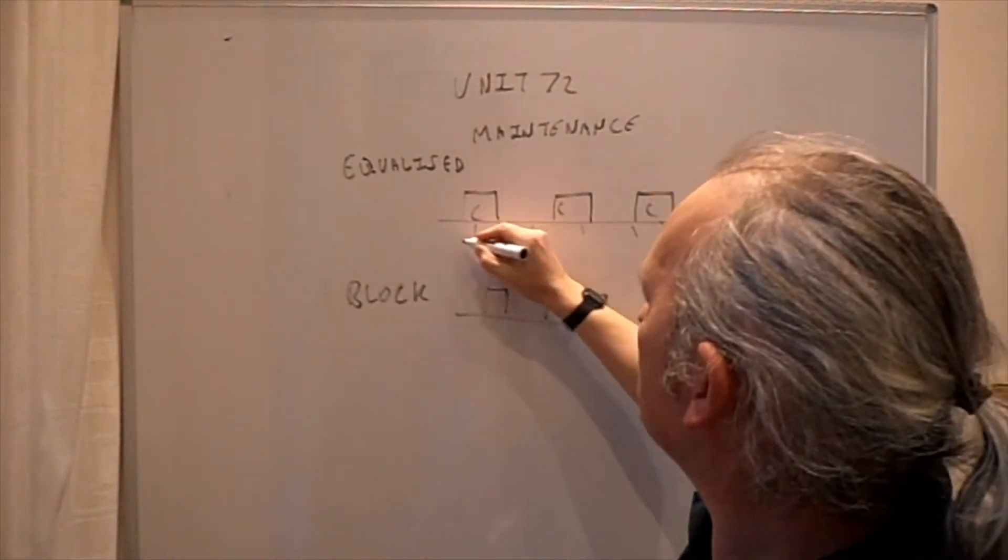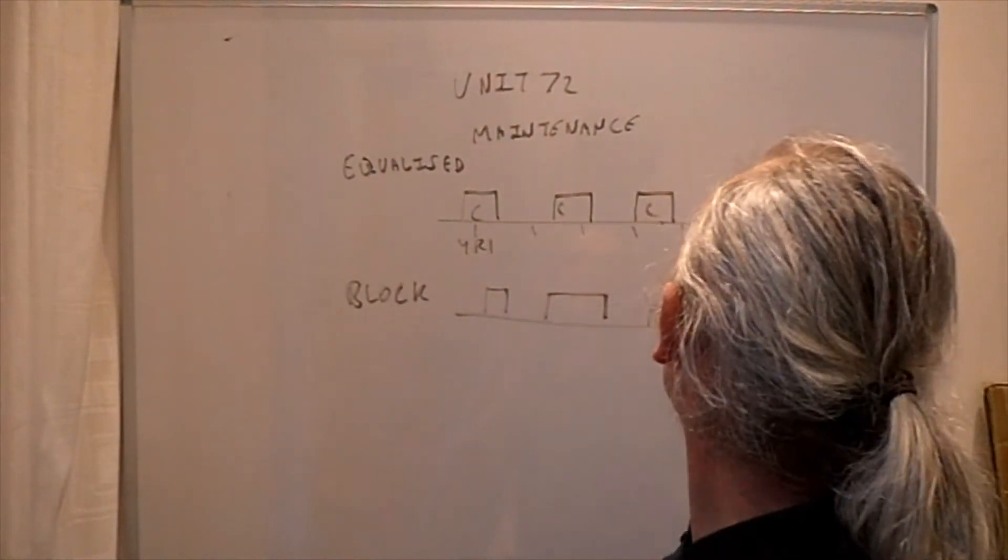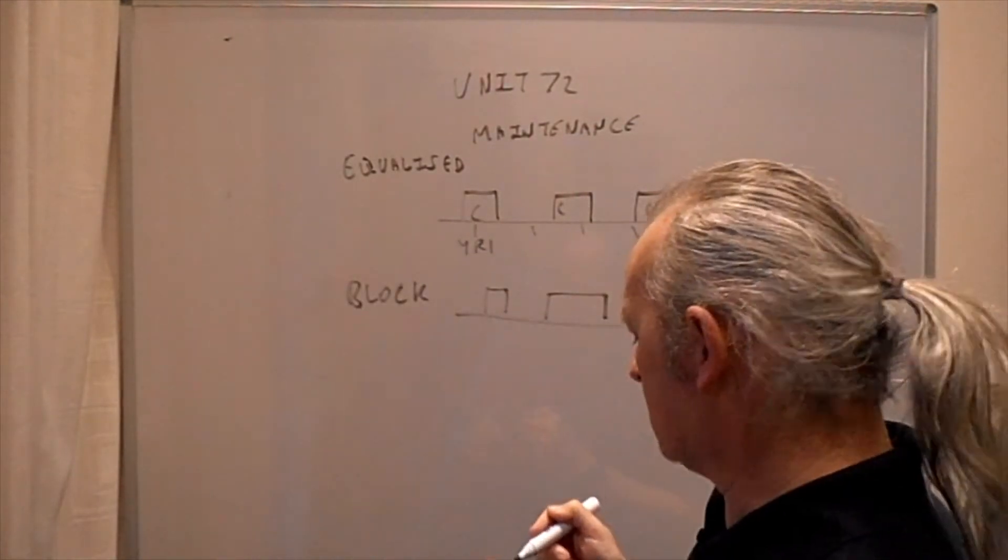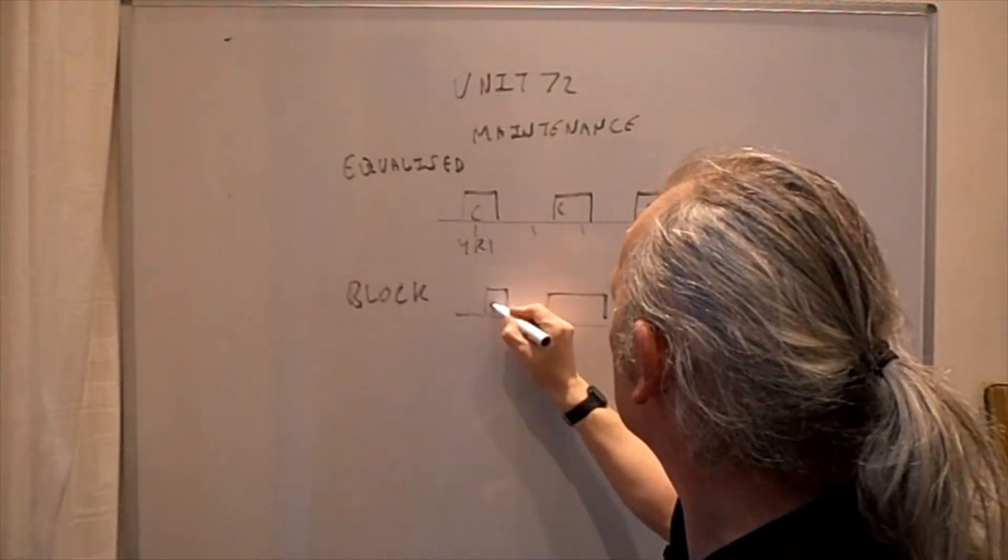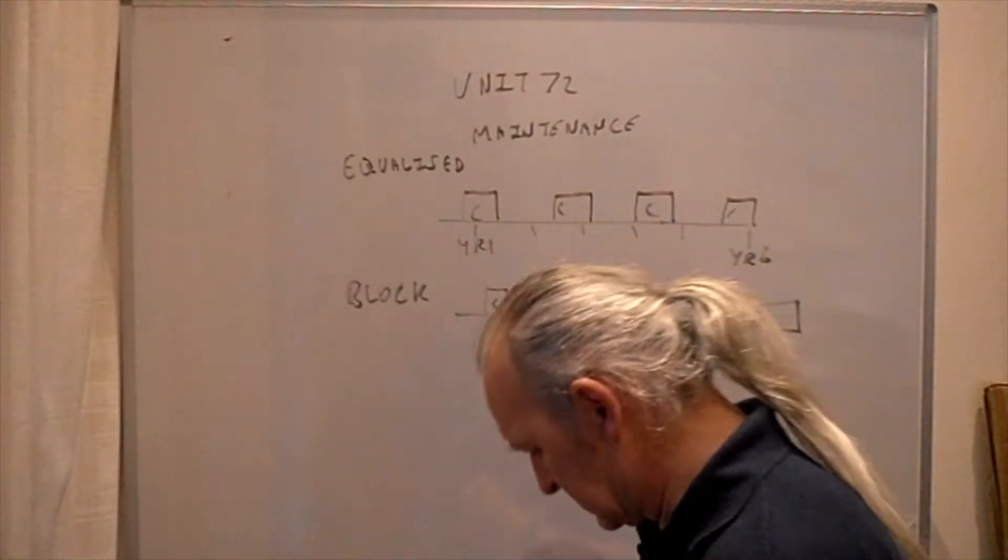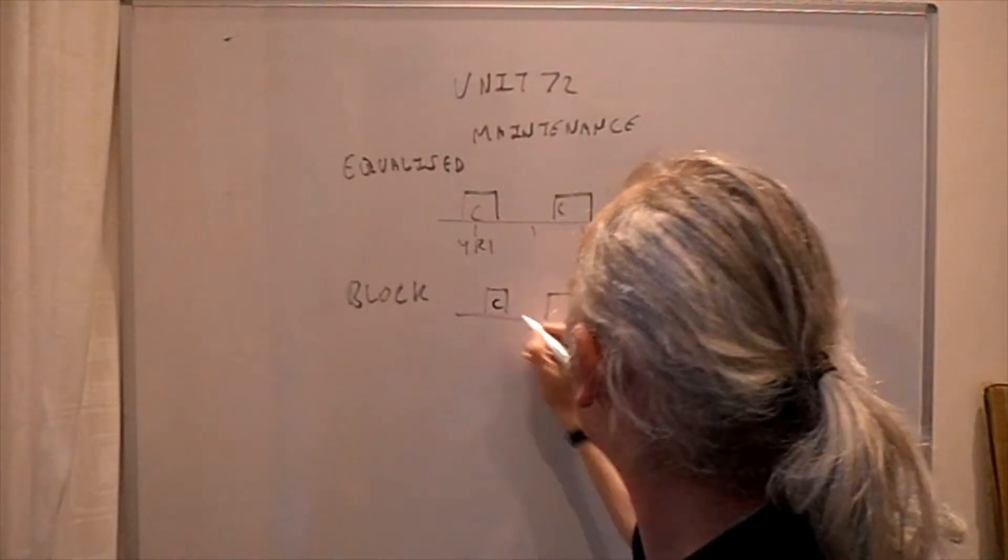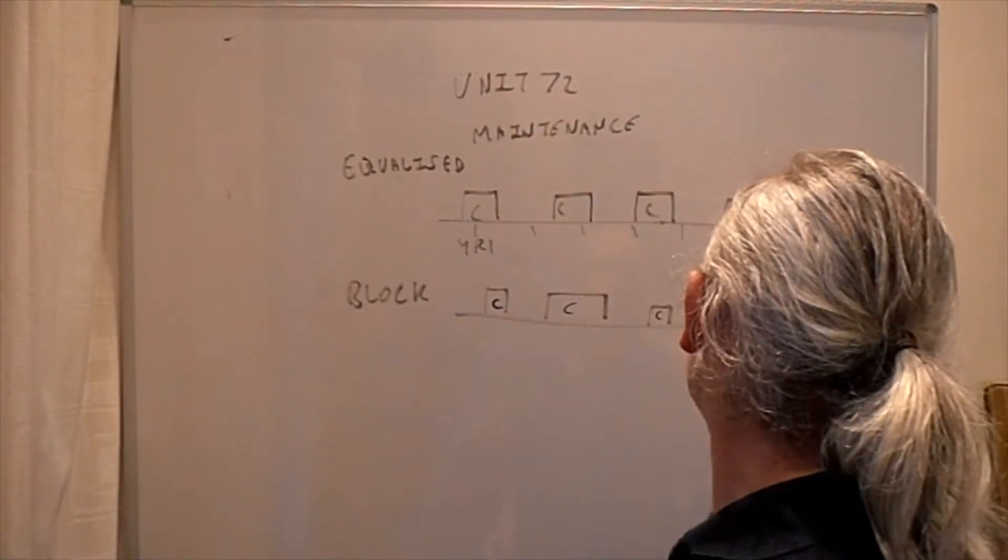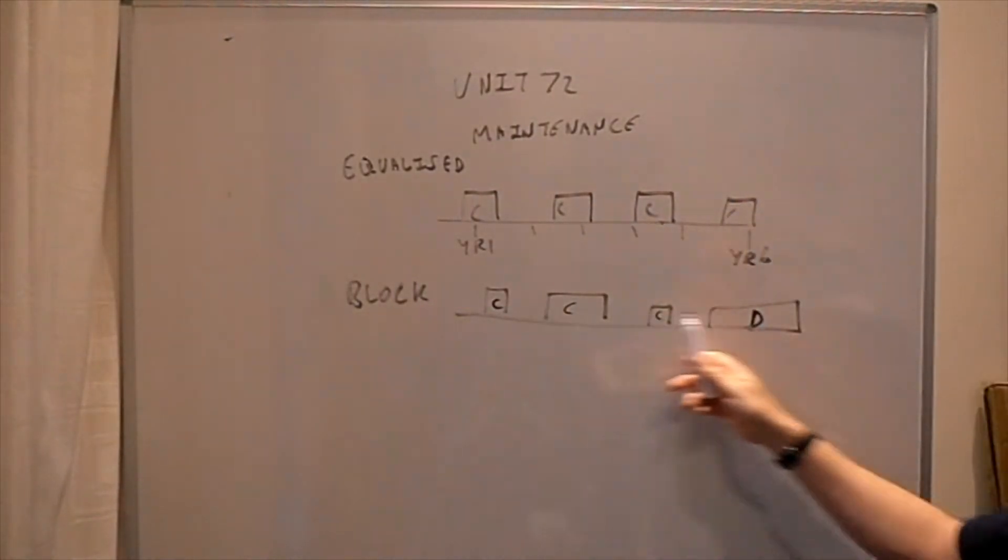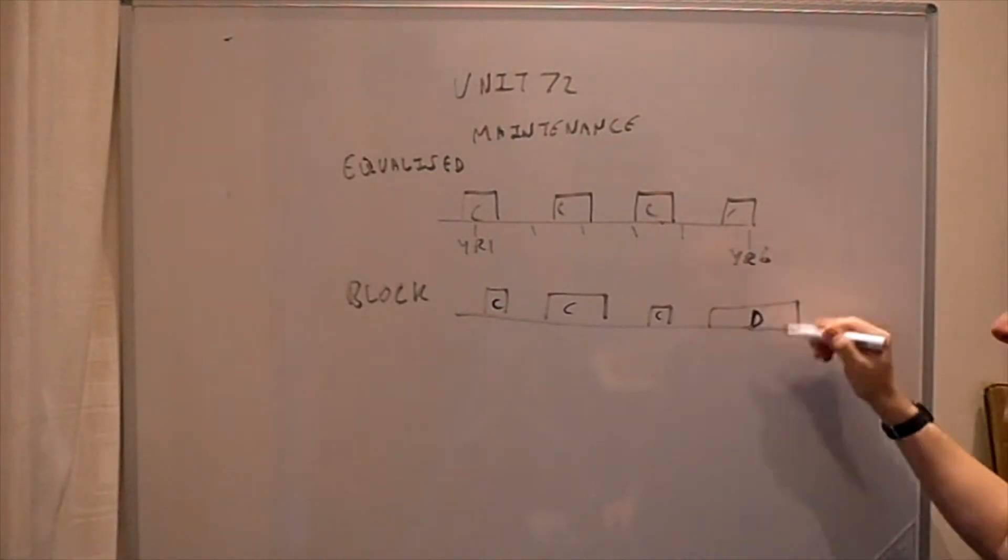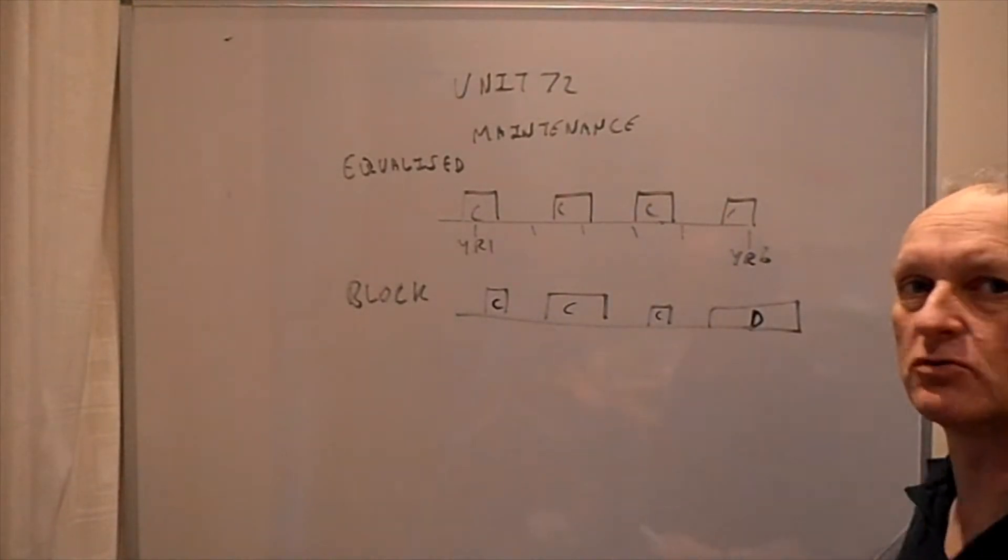Two different types of maintenance planning: one is equalized. If we put that as year one up to year six, that's a six-year period planning aircraft in for maintenance. You have your C-type checks followed by a large D-type check where you put it in the hangar for up to about three weeks to a month.